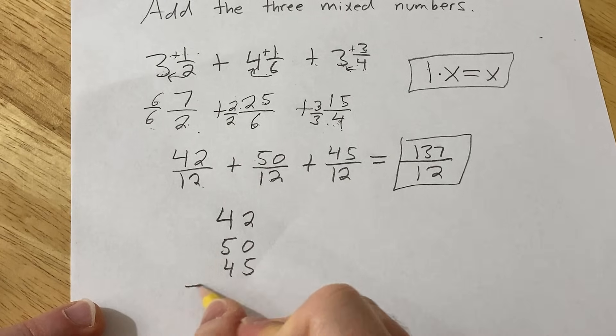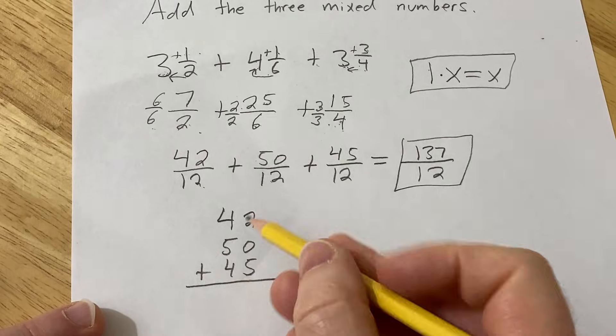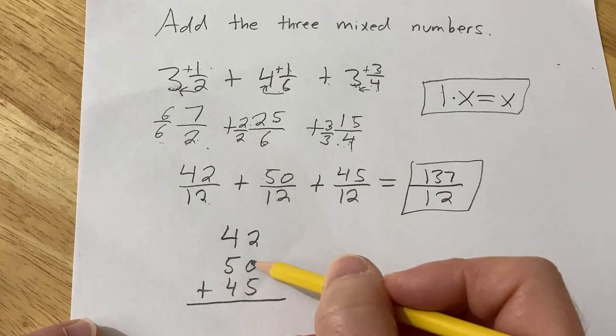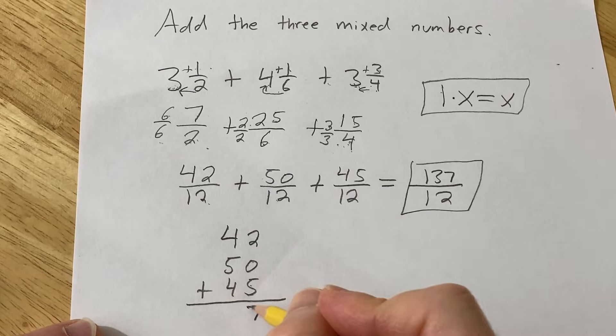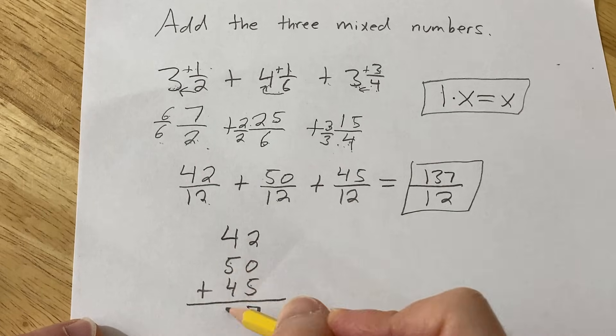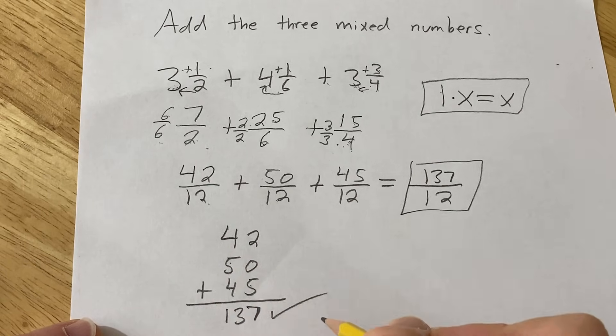Then you add straight down this column. So you do 2 plus 0 plus 5, so that's 7. And then 4 plus 5 is 9, plus 4 is 13, so 137. So it checks.